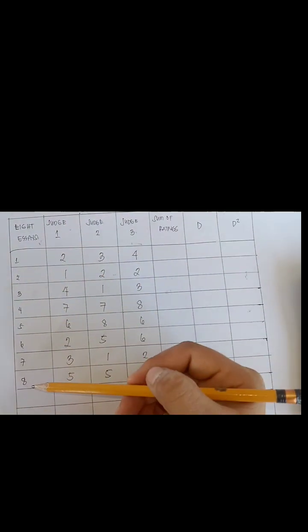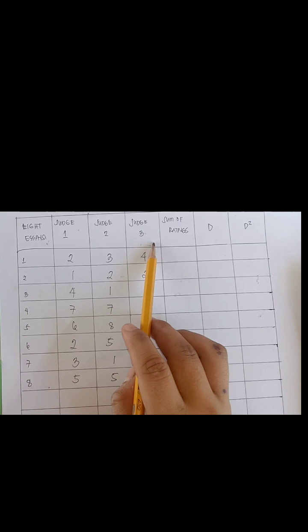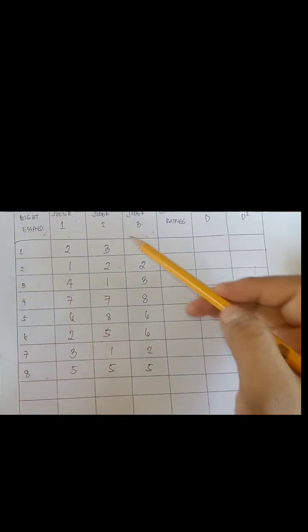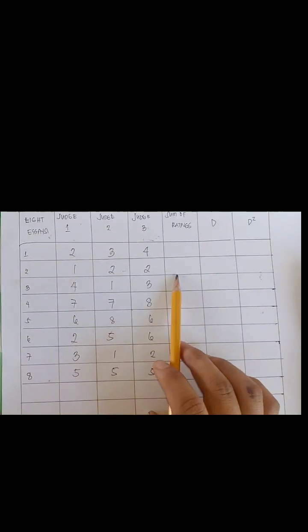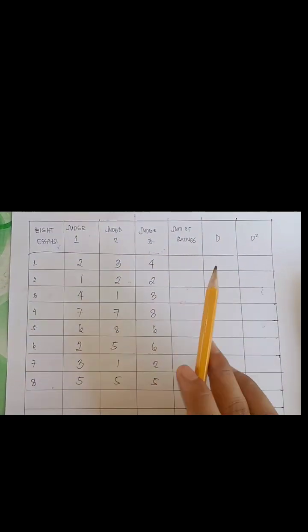So as stated in the problem, we have eight essays, placed in the first column. And then we have the three judges in the first, second, up to the third row. And these are the ratings. What we are going to find is the coefficient of concordance and the interpretation of Kendall's W.